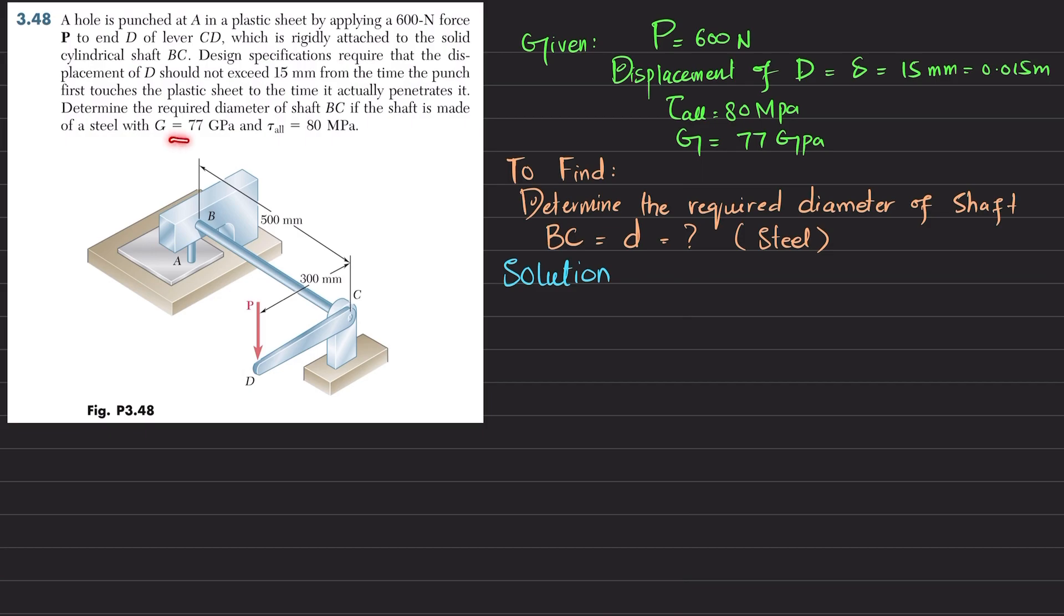All other values G and tau allowable are given, so you have to find the diameter of this shaft. Let's start with the solution. First, we know that torque T equals P times perpendicular distance. This is P which is 600 newtons, and this is the perpendicular distance 300 millimeters, so 600 multiplied by 0.300 meters equals 180 newton-meters.